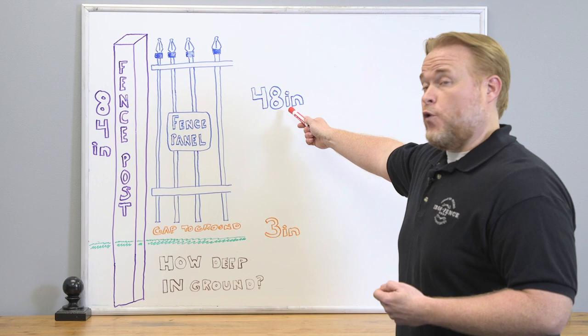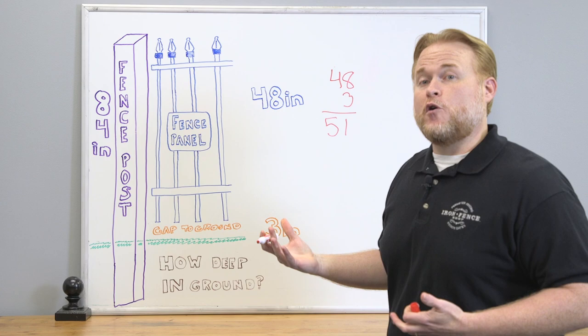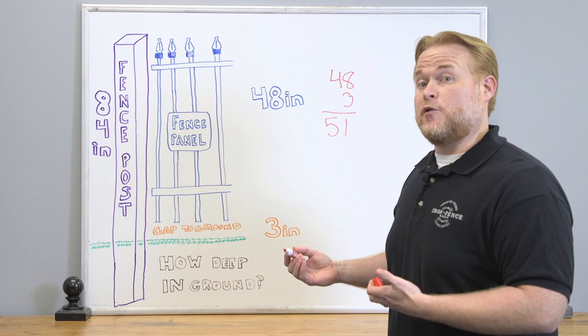First, let's calculate how much of that 84 inch post is going to be above ground. To do that, we take our 48 inch tall panel plus our 3 inch gap below it, so 48 plus 3 equals 51 inches. So of the 84 inch post, 51 inches of it's going to be above ground.